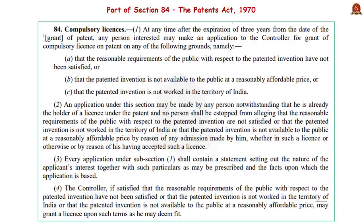First, let us see some important statutory requirements under the Patents Act of 1970. Let us see the provisions in Chapter 16 of the Act. This chapter deals with the working of patents, compulsory licenses and revocation. As per Section 84, any person interested may make an application to the Comptroller General of Patents for grant of a compulsory license on a patent.